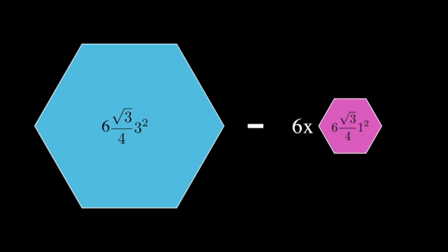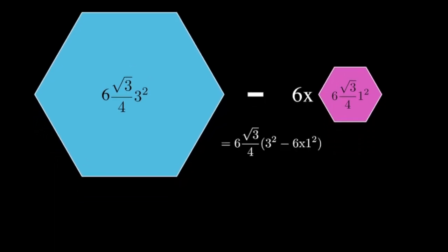Similarly, for the small hexagon, we have 6 times root 3 over 4 times 1 squared. Now, let's factor out 6 times root 3 over 4, and we get 3 squared minus 6 times 1 squared, which is just 9 minus 6, or 3. And now this is equal to 18 over 4 root 3, which is 9 root 3 over 2, our final area.